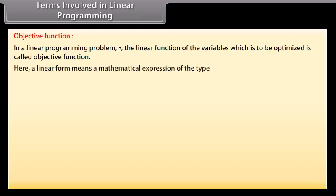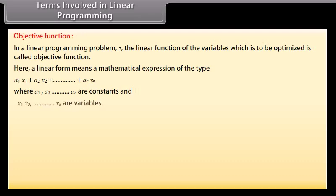Here, a linear form means a mathematical expression of the type A1·X1 + A2·X2 + ... + AN·XN, where A1, A2, ..., AN are constants and X1, X2, ..., XN are variables.